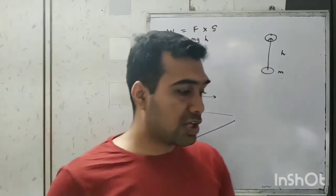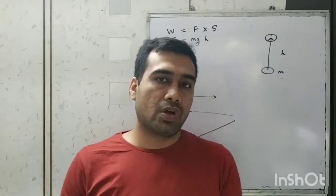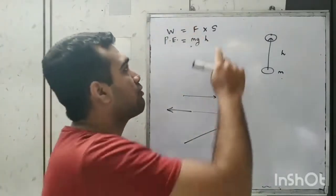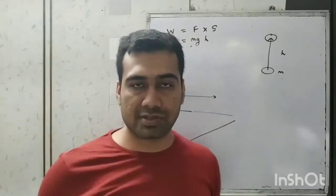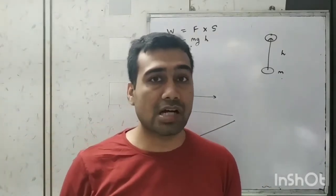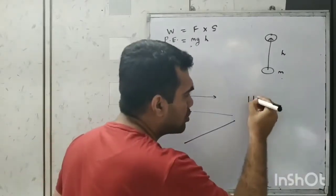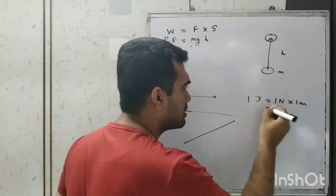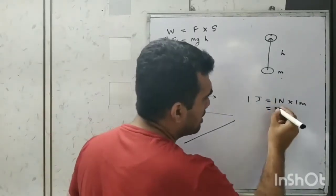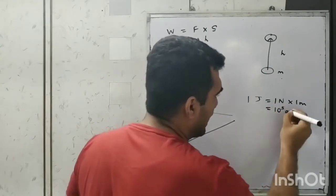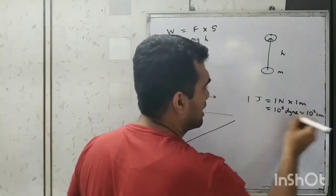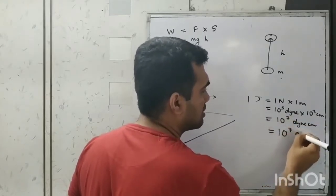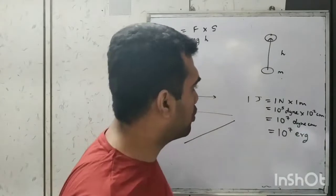The units of work are the same as units of energy. One joule is done when a force of one newton produces a displacement of one meter in the direction of force. Another unit is erg (CGS). One joule = 1 newton × 1 meter = 10⁵ dyne × 10² cm = 10⁷ dyne·cm = 10⁷ erg.